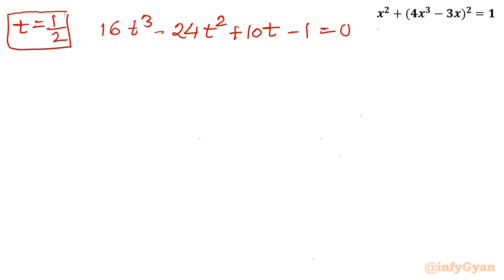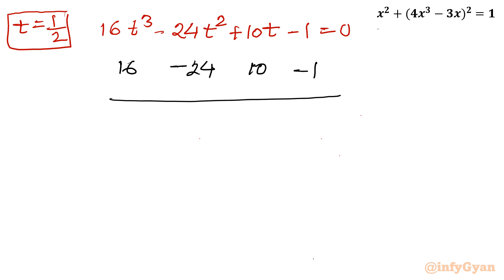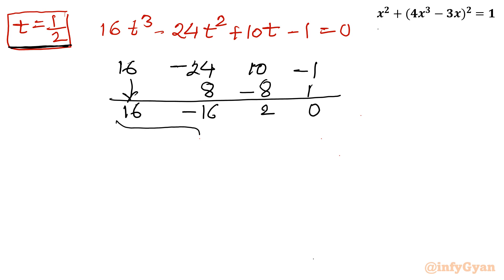Using synthetic division, I write all the coefficients of the cubic equation: 16, -24, 10, and -1. Taking the product with 1/2: the leading term stays as 16; 1/2 × 16 = 8, giving -24 + 8 = -16; 1/2 × (-16) = -8, giving 10 - 8 = 2; 1/2 × 2 = 1, giving -1 + 1 = 0. These are the coefficients for the resulting quadratic equation.